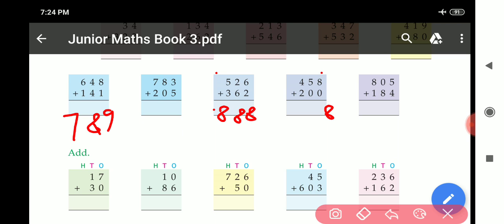Now this part. 8 plus 0, 8. 5 plus 0, 5. 4 plus 2, 6. Answer is 6, 5, 8. Now come to this part. 5 plus 4, 9. 8 plus 0, 8. 8 plus 1, 9. Answer is 9, 8, 9.